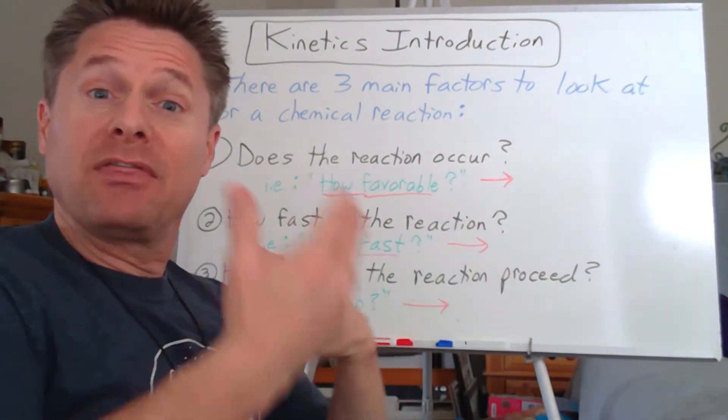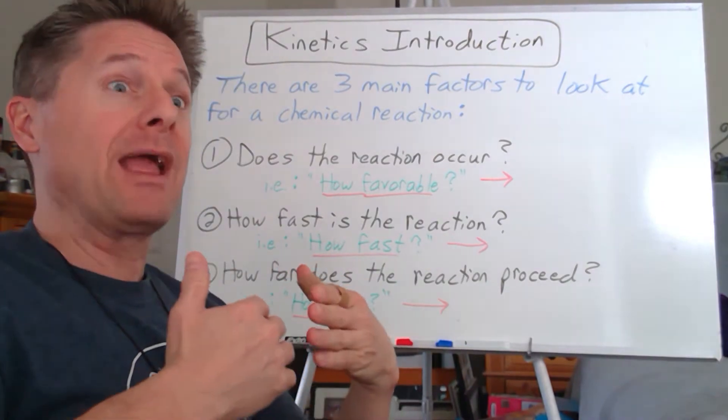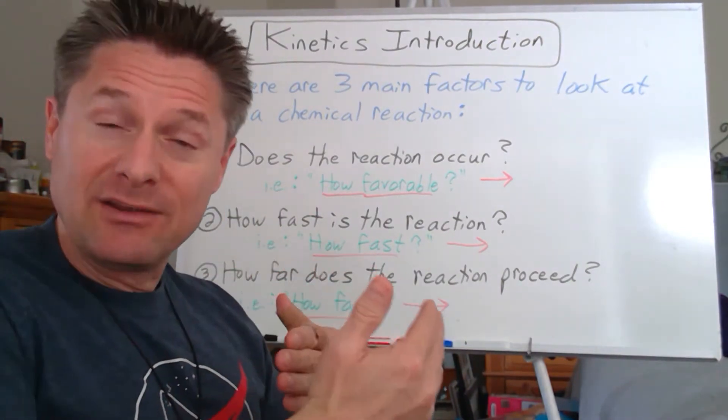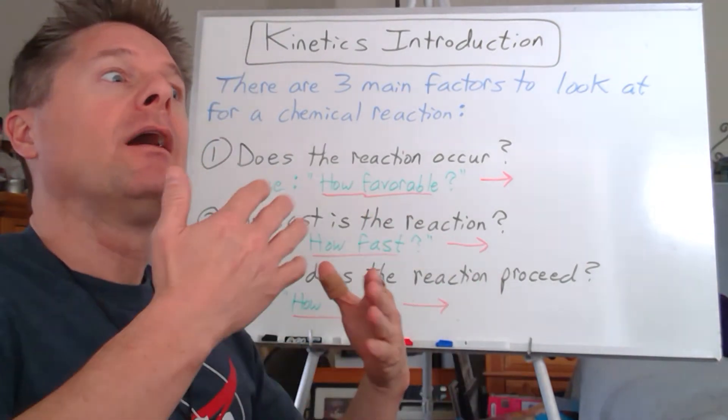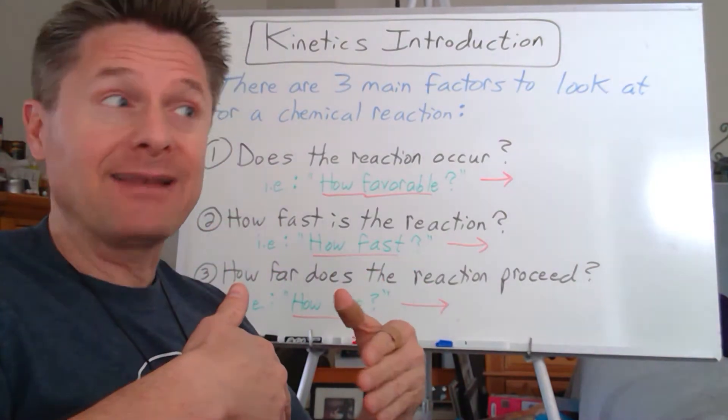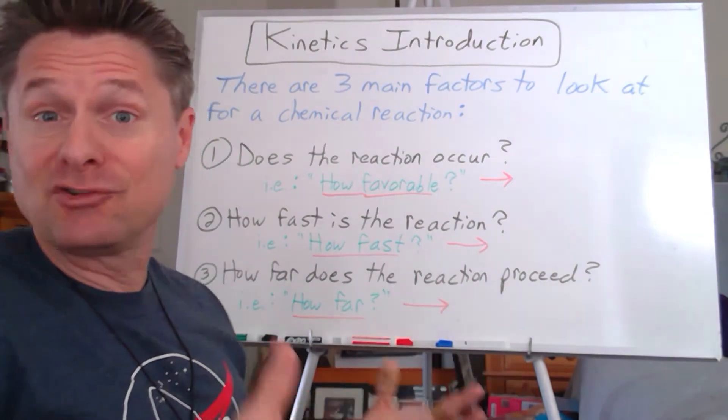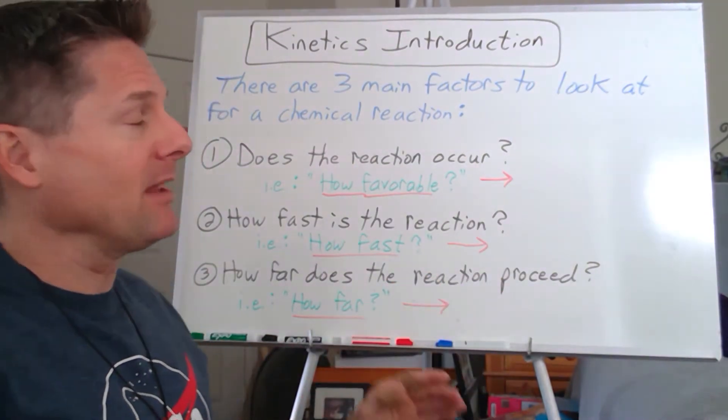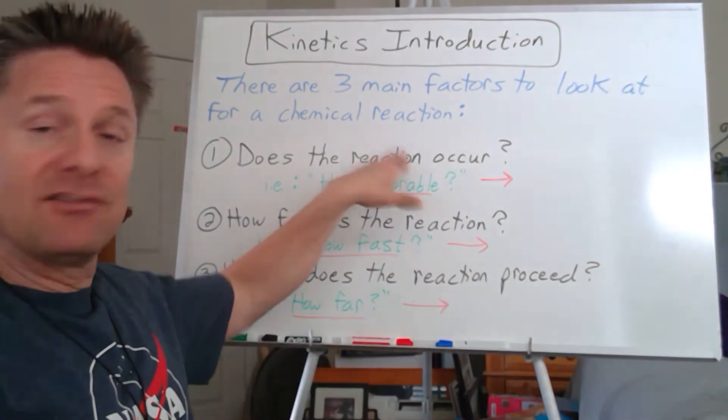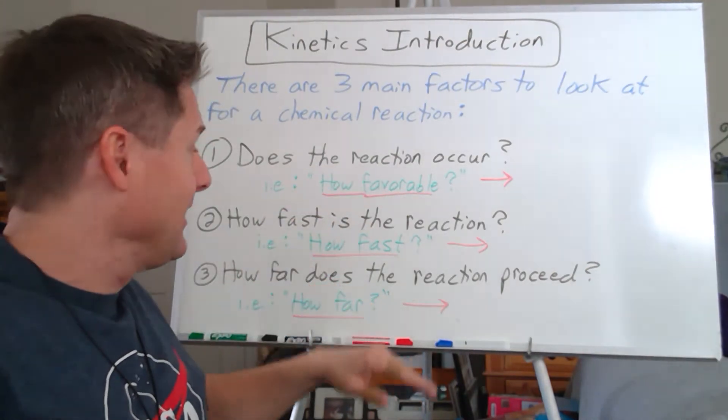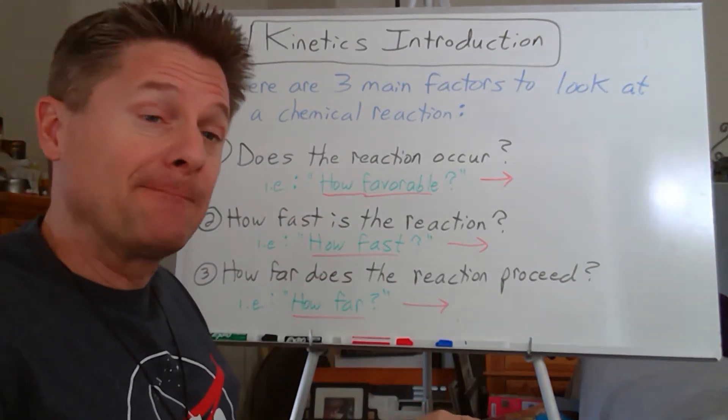We have this thing that happens where a reaction doesn't necessarily proceed to completion—you have a certain amount of leftover reactants and you have some products, so both of them exist at the same time. Those are the three basic questions: does the reaction occur, if it does how fast is it, and then how far does it proceed?